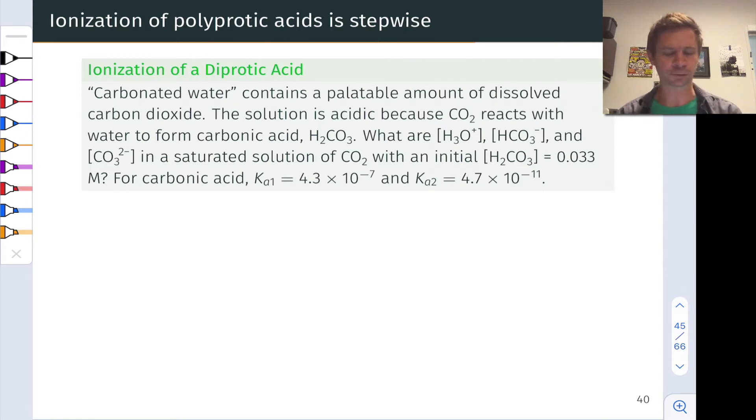We'll see how that works in this practice problem. We've got carbonated water, which contains a palatable amount of dissolved carbon dioxide. The CO2 reacts with water to produce carbonic acid. And we want to know what are the equilibrium concentrations of H3O+, HCO3- (bicarbonate), and CO32- (carbonate ion) in a saturated solution of CO2 in water with an initial carbonic acid concentration of 0.033 moles per liter. And we're given Ka1 and Ka2 for carbonic acid, which is a diprotic acid.